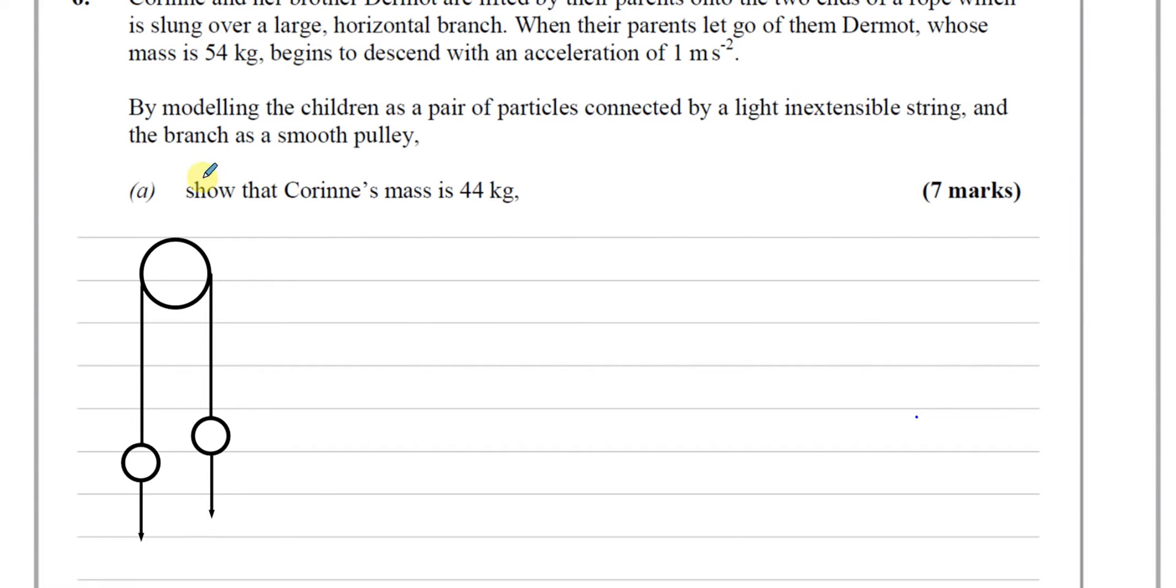You have the tension in the strings because the tension on both sides of the pulley is the same because it's one string and the pulley is smooth. Corinne's mass is M, we have to find her mass. Let's call that MG for now. That's the force acting down. And Dermot, his mass is 54 kilograms, so we'll call that 54G.